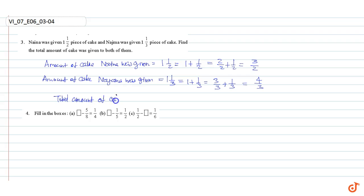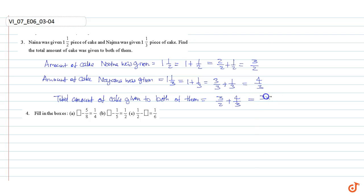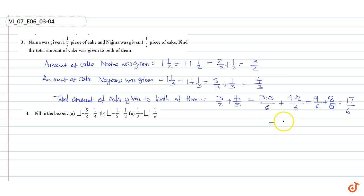Total amount of cake given to both of them: three by two plus four by three. Taking LCM as six, we get three into three divided by six plus four into two divided by six, which is equal to nine by six plus eight by six.